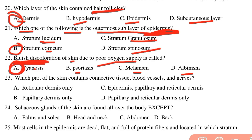Which part of the skin contains connective tissue, blood vessels, and nerves? The options are reticular dermis, papillary dermis, epidermis, and papillary and reticular dermis. The answer is the dermis — both the papillary and reticular dermis contain these neurovascular structures. The reticular layer makes up about 70% of the dermis.